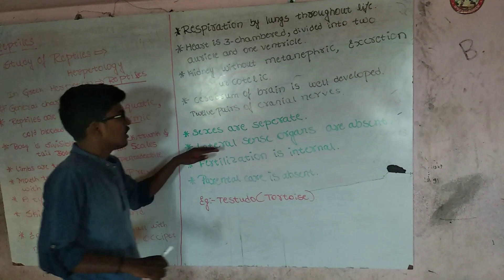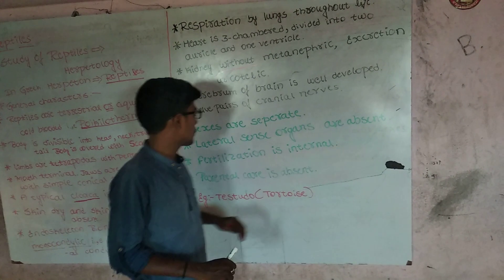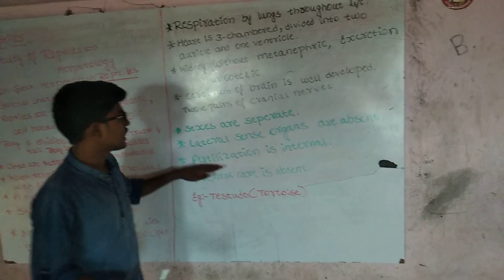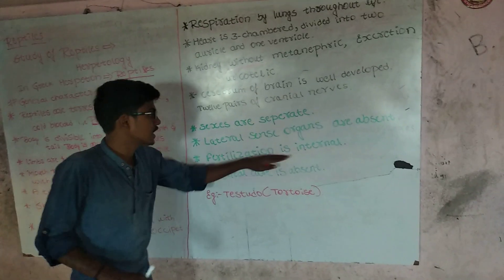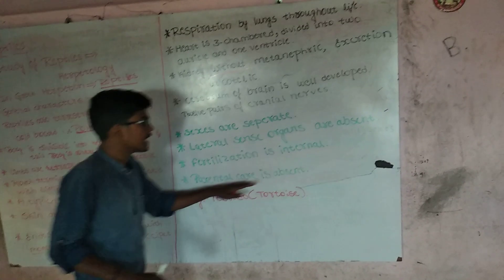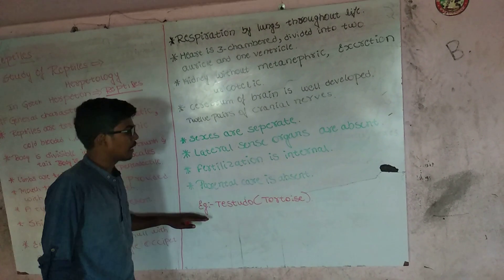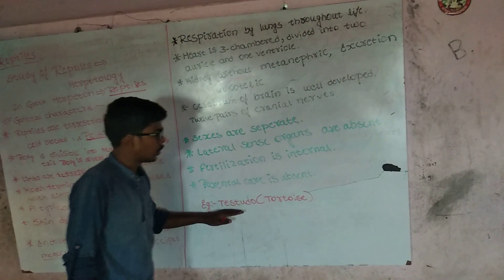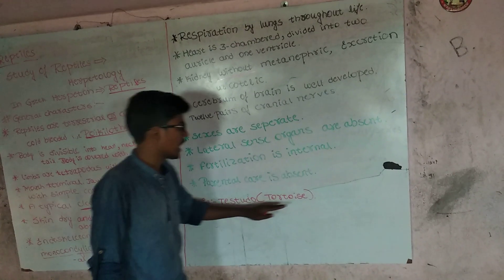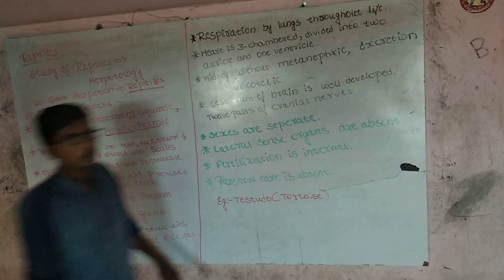Sexes are separate. Lateral line sense organs are absent. Fertilization is internal. Parental care is absent. For example, Testudo, commonly known as tortoises. Thank you.